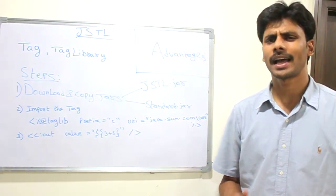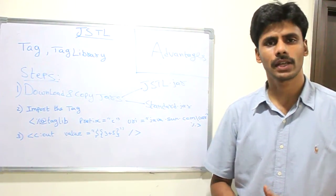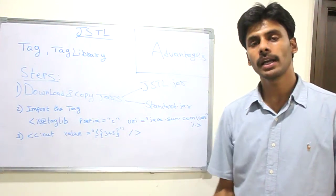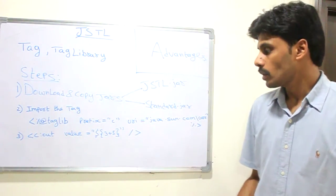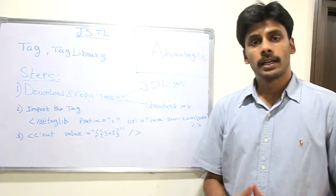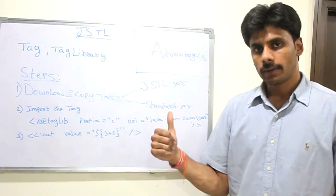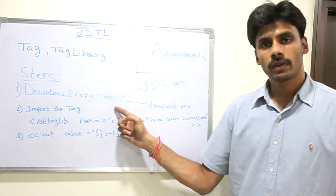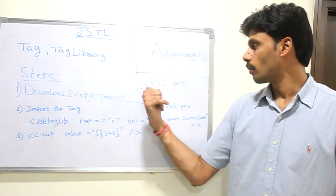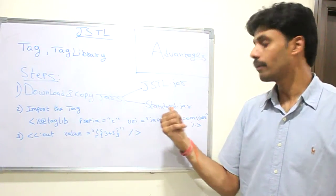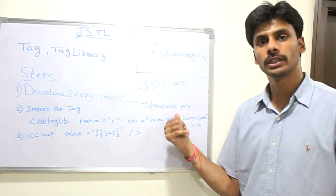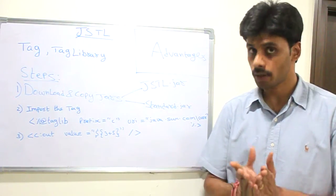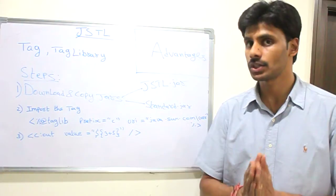There are other tags like XML tags, SQL tags, etc., but the popular ones are the core tag library. To use JSTL, we download the JARs from Sun Microsystems — just Google for them. One is jstl.jar and the second one is standard.jar. Drop them in your WEB-INF/lib folder of your web application; that's where all your web application JARs go.